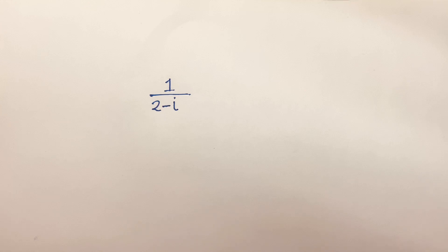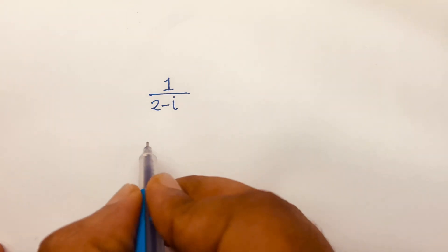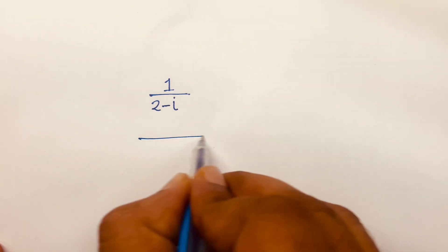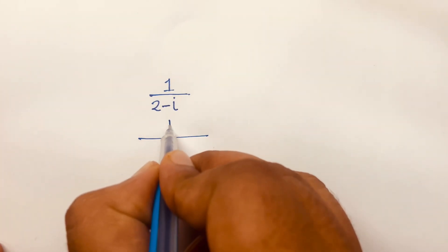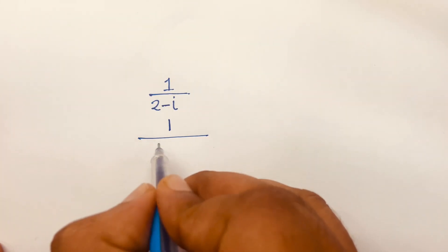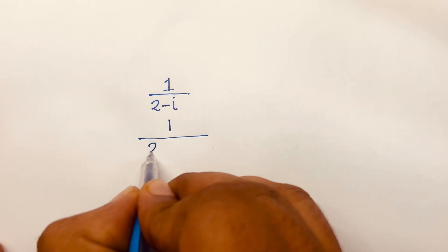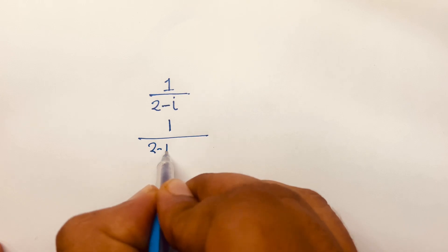Hello everyone. In this video I solve this complex number question — we'll find out the modulus and argument. The question is 1 over (2 minus i).